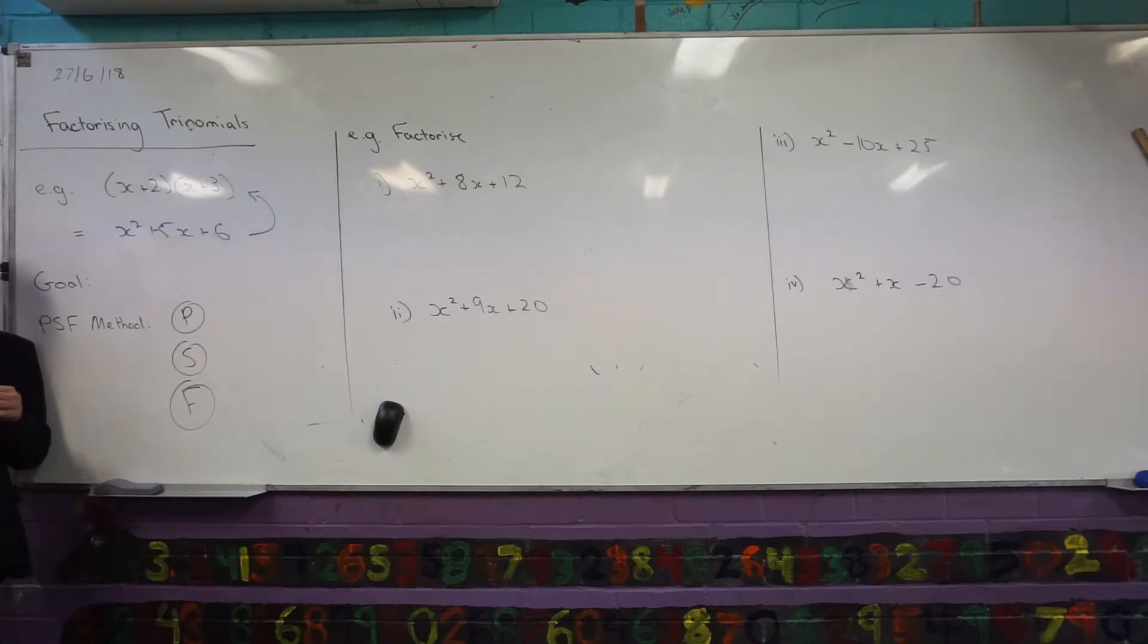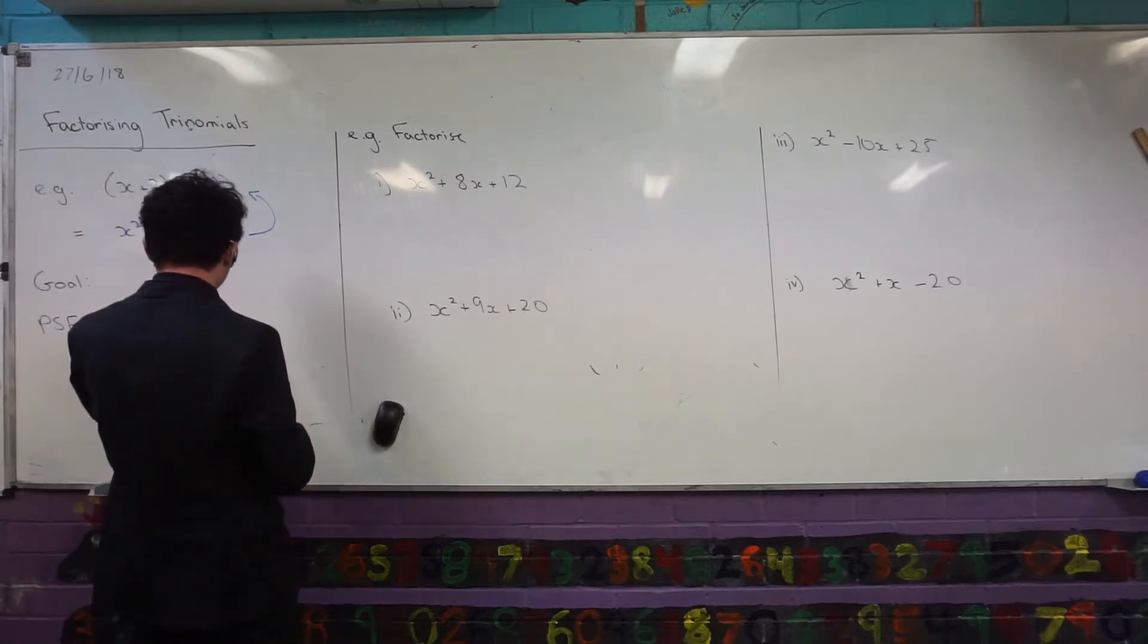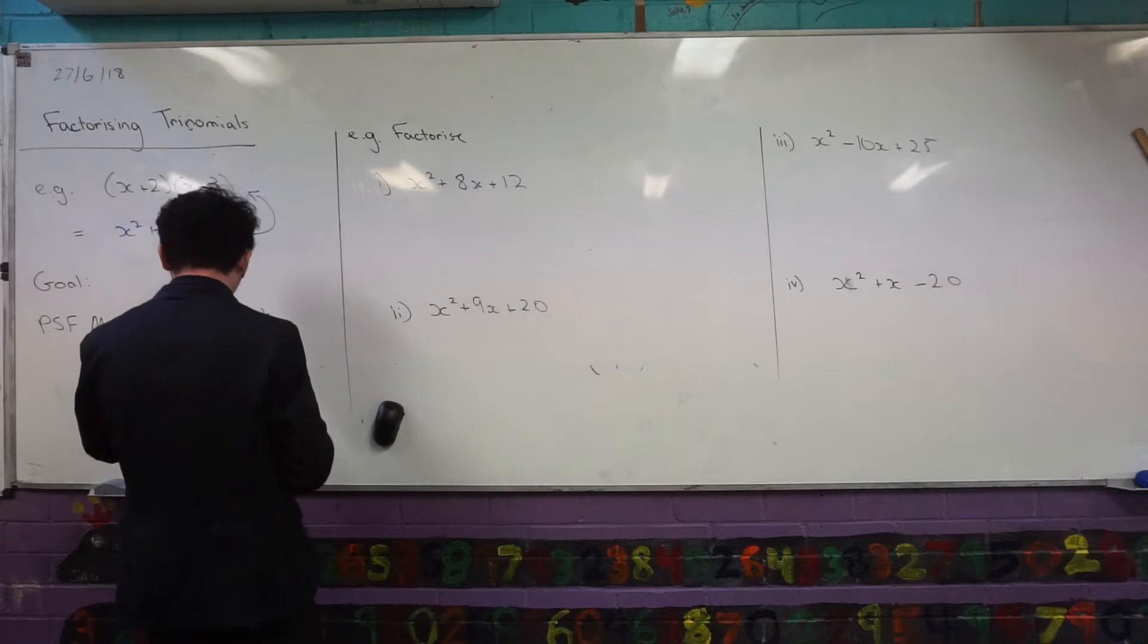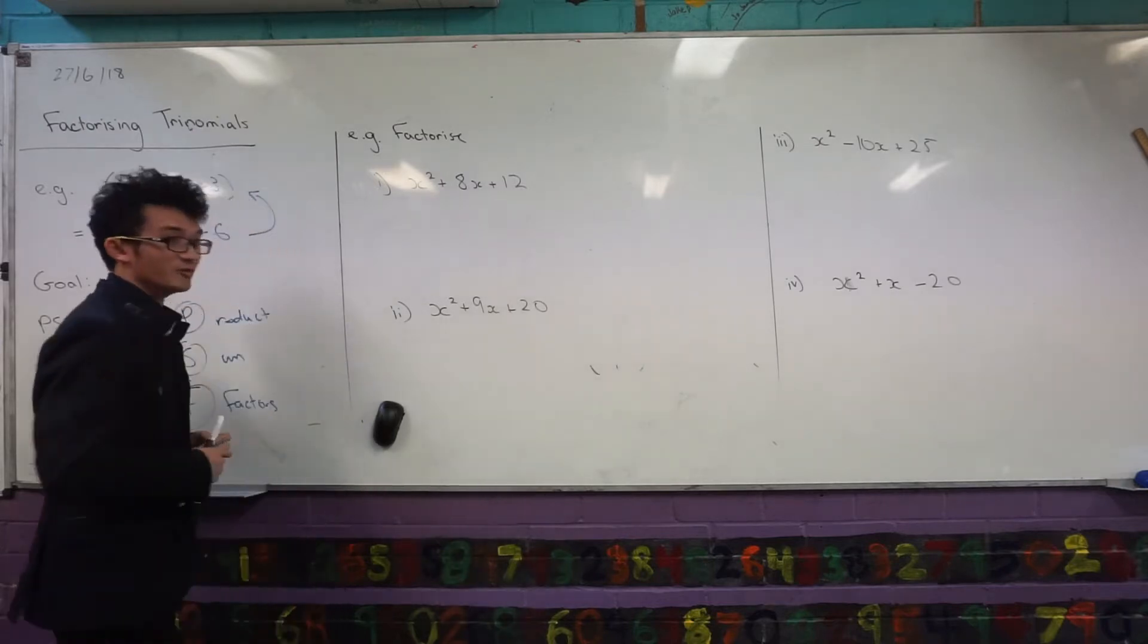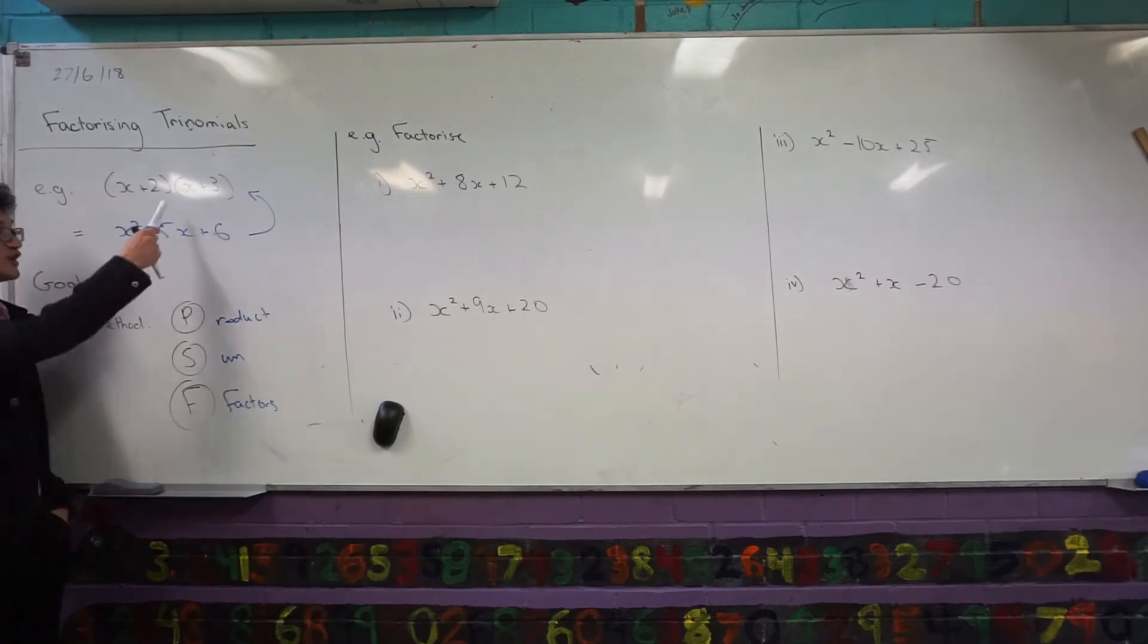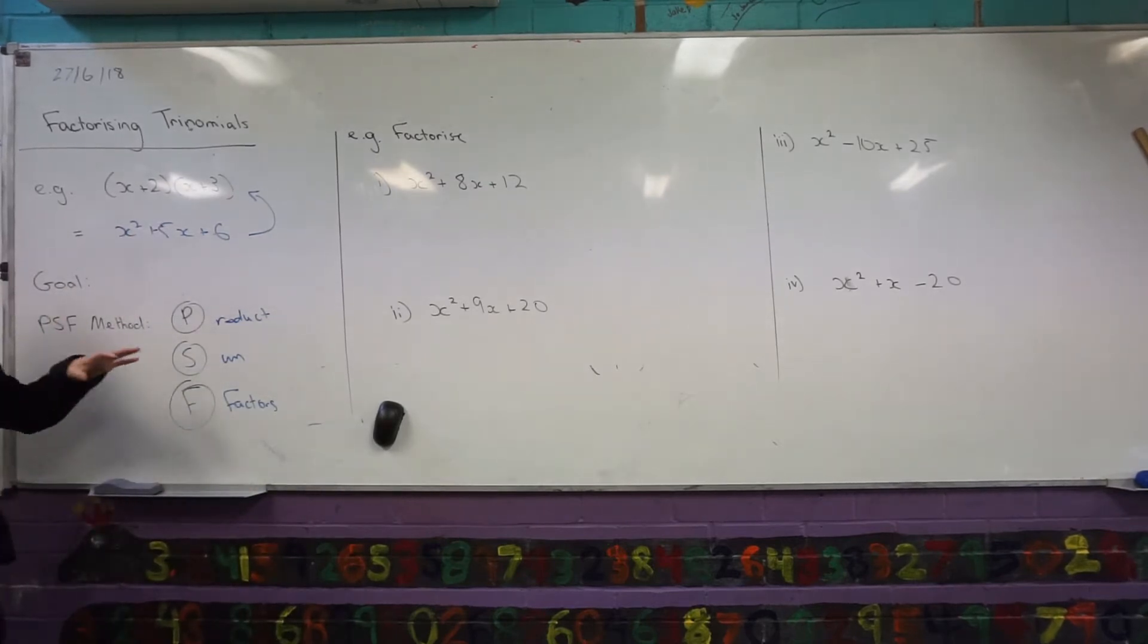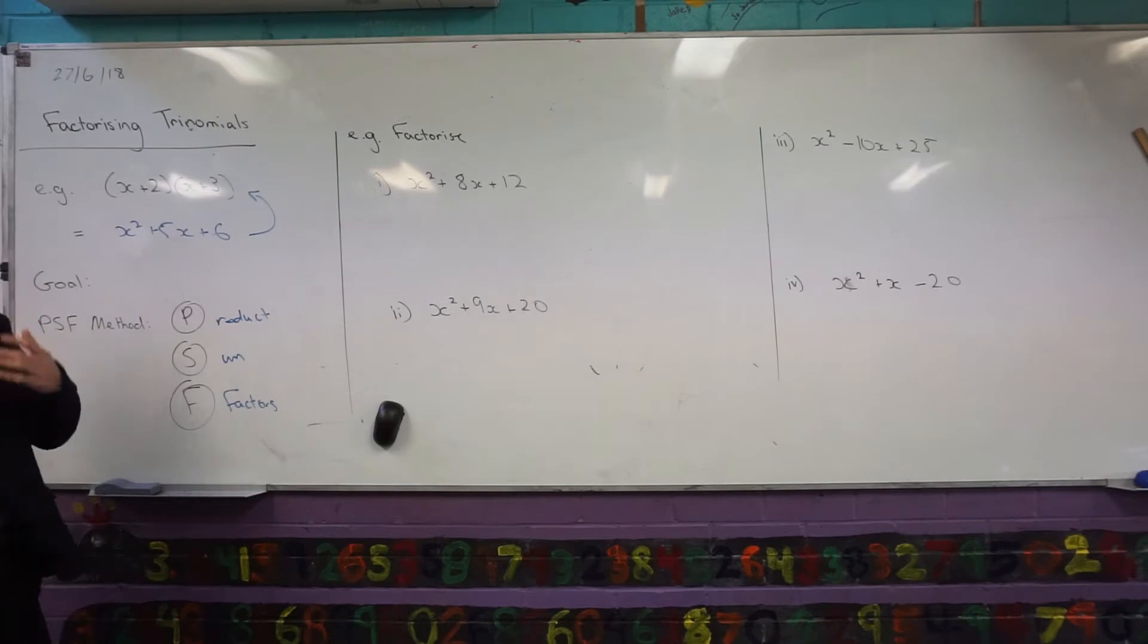Any time you see a trinomial, and you're trying to factorize it, you're trying to introduce brackets again, I want you to think about this method, and it's called PSF. It's a little mnemonic, and what it stands for is product, sum, factors. Any time you see a trinomial, and you want to try and factorize, you want to try and go back to these brackets, I want you to think about PSF, product, sum, and factors. What does this actually mean?